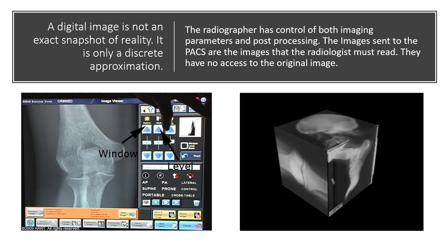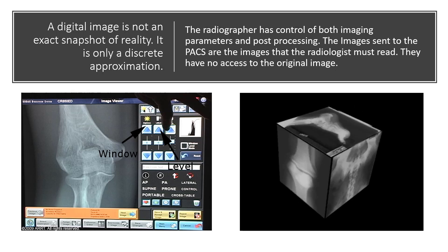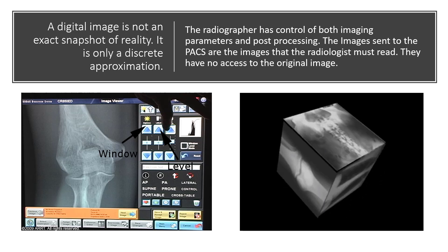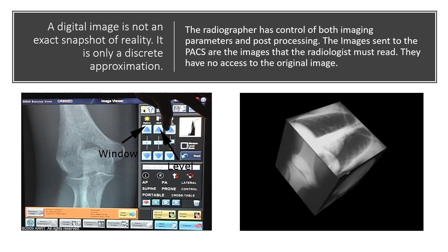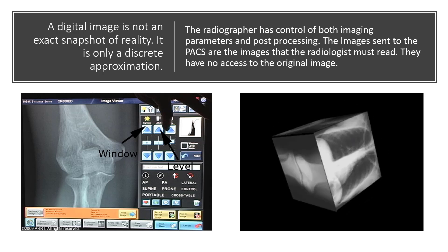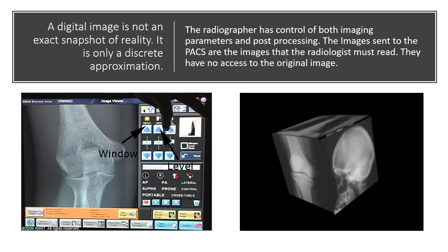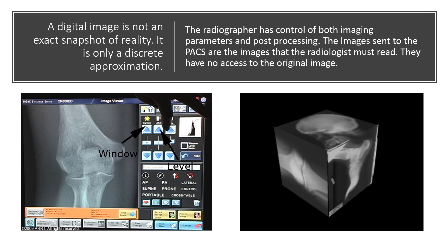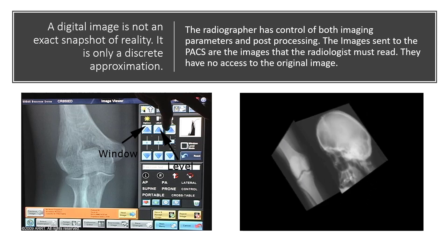A digital image is not an exact snapshot of reality. It is only a discrete approximation based upon the factors that we request to see. We collect data with our exposure, that exposure and data are stored, and the data can be brought up many times and changed or post-processed to reveal different areas of interest. This keeps from having to re-expose the patient, as we used to have to do with analog or film screen images if we wanted to see a different contrast or a different area.